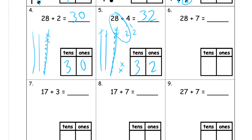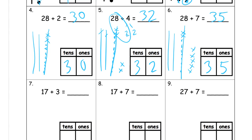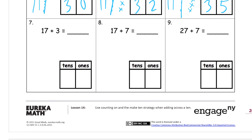28 plus 7 — so we're going to draw the 28 again: 1, 2, 3, 4, 5, 6, 7, 8, 9, 10. Now we need 7 X's: 1, 2, 3, 4, 5, 6, 7. That's 3 tens and 5 ones for 35. For 17 plus 3 — that's a 10 and 7 ones, then 3 X's: 8, 9, 10. You might recognize that 7 and 3 are partners of 10. So that's a 10 — we have two tens and 0 ones for 20.